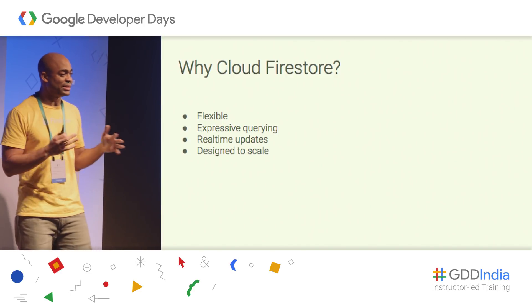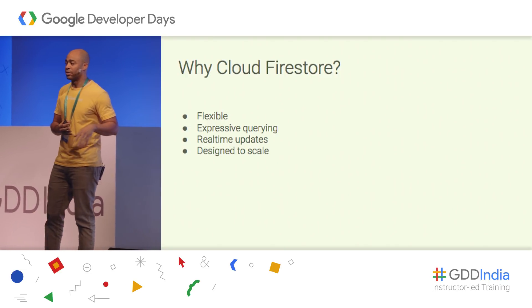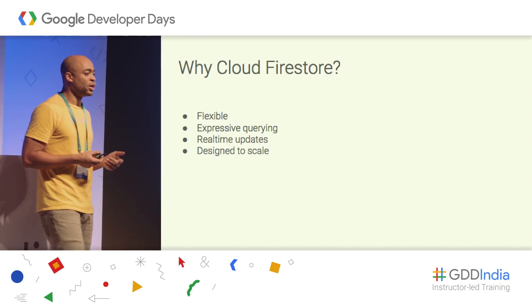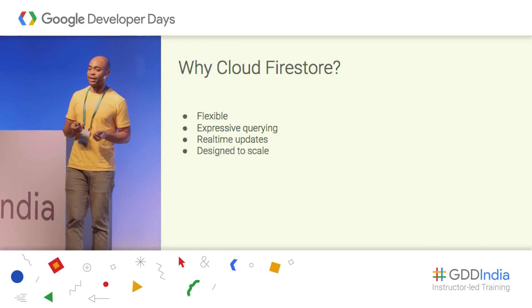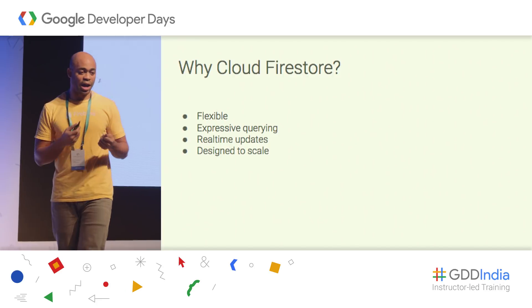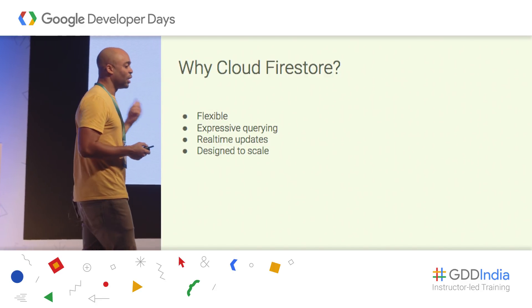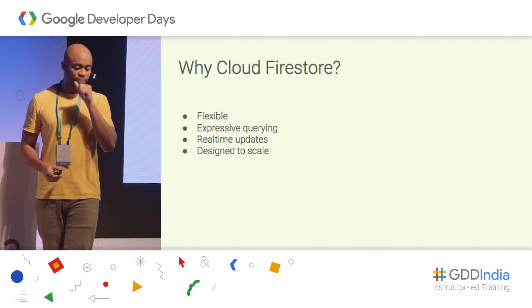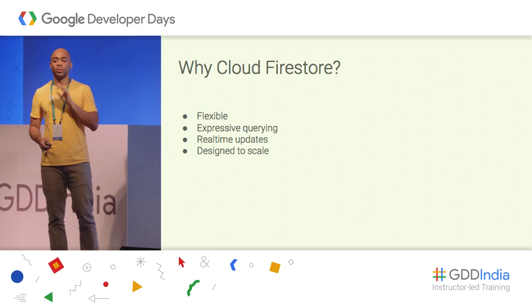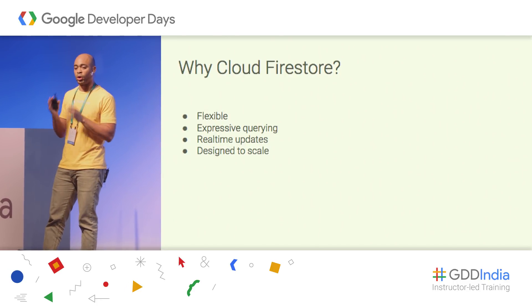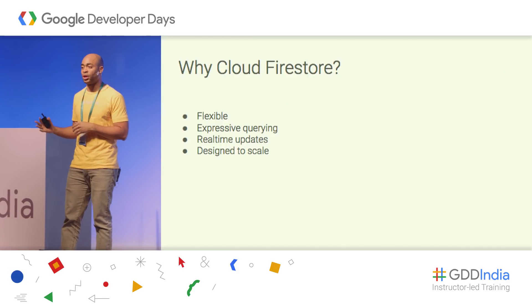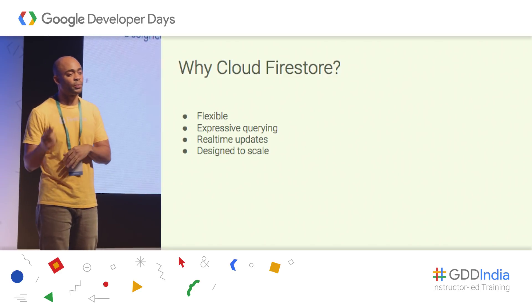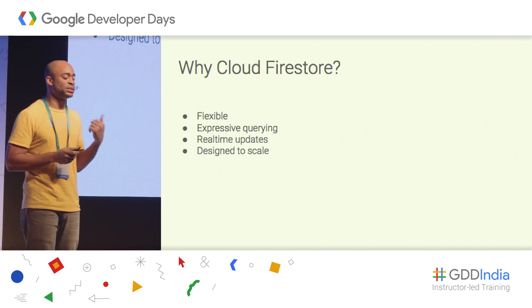Firestore is flexible — it has SDKs for Android, iOS, and web, but also supports up to 10 server-side languages including Node.js, Go, Java, and Python. It has expressive querying, so you can do compound queries. It's still real-time like the real-time database, so you get callbacks when data changes and can update your app as a result. It's also available at massive scale — if your app gets featured and you go from 10 users to 10 million users, you should be okay. Note that if latency is a hard requirement, the real-time database is still worth considering; I'd suggest starting with Firestore and only going back to real-time database if Firestore can't meet your latency requirements.